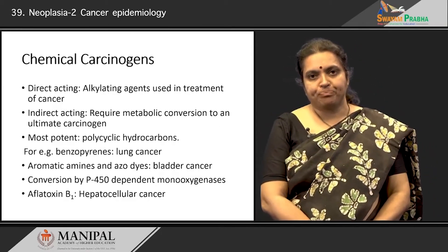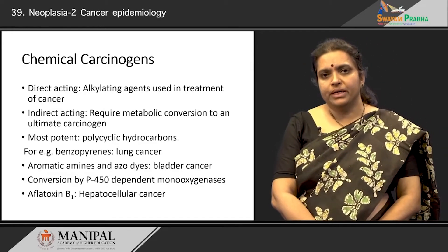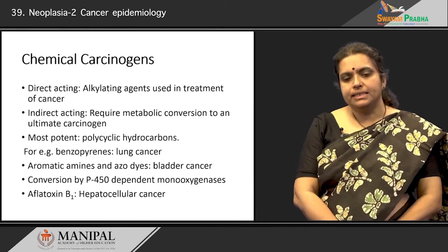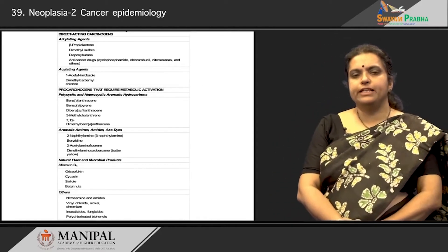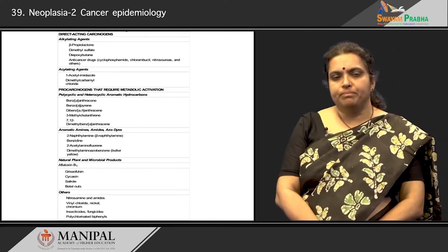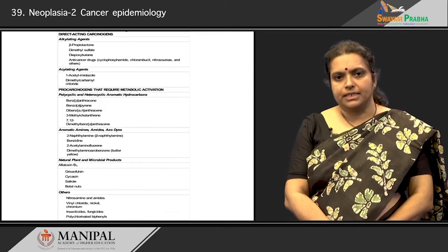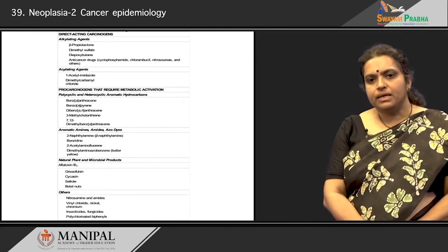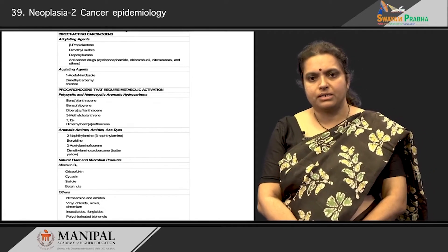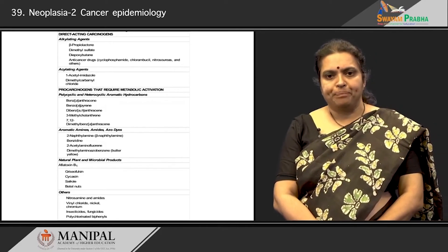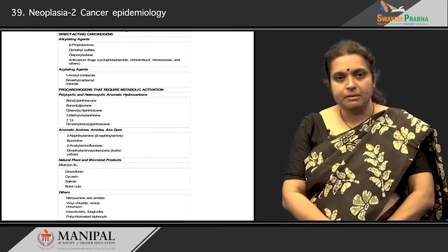There is also aflatoxin B1, which can grow in improperly stored nuts and can cause hepatocellular cancer. The known carcinogenic agents include directly acting ones such as alkylating agents and acylating agents, as well as pro-carcinogens that require metabolic activation — including polycyclic and aromatic hydrocarbons, aromatic amines, and natural plant products such as aflatoxin.